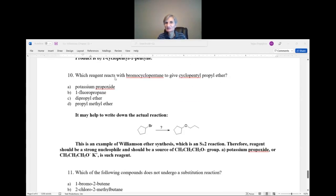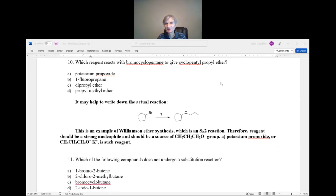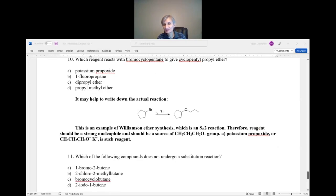Question number 10. Which reagent reacts with bromocyclopentane to give cyclopentylpropyl ether? And here we have four reagents. It's best to write a reaction. So, bromocyclopentane. And this is cyclopentylpropyl ether. So now, what is the reagent? You have already seen this. This is the leaving group. And it's replaced by this species, right? And so, three carbons and oxygen. That's propoxide anion.